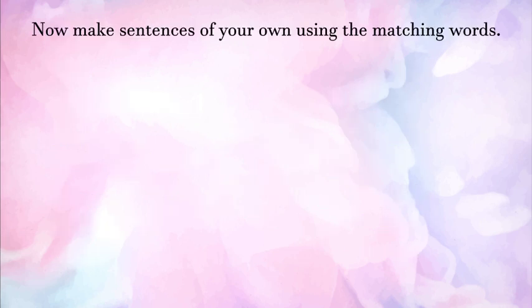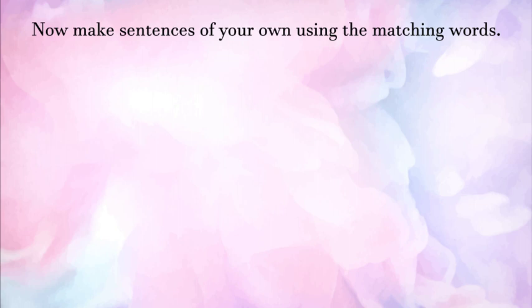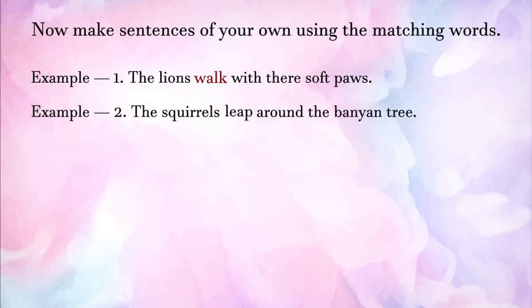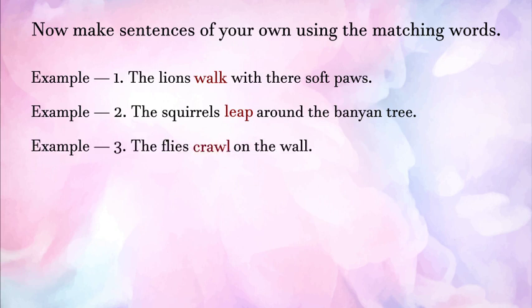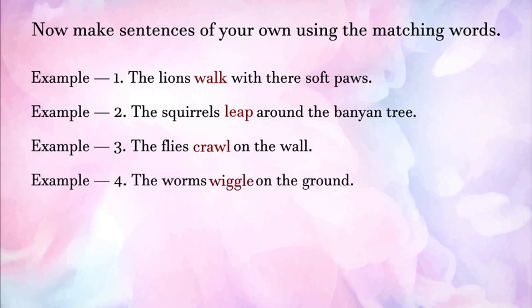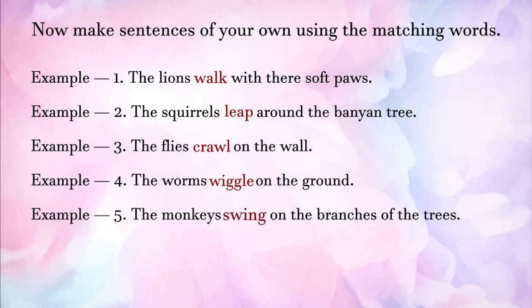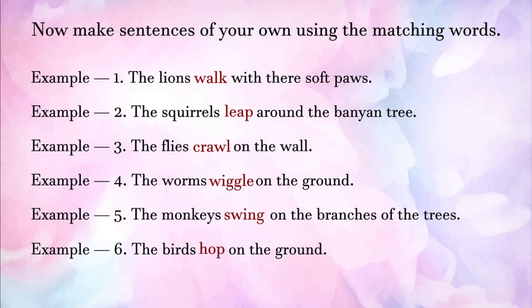Now you have to make a sentence using both these words. For example: 'The lions walk with their soft paws.' Another example: 'The squirrels leap around the banyan tree.' Similarly, we can say: 'The worms wiggle on the ground. The monkeys swing on the branches of the trees. The birds hop on the ground.' Like this, you can make sentences using more words related to movement.